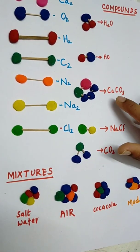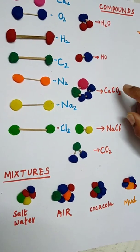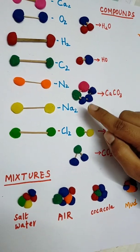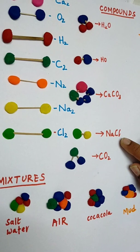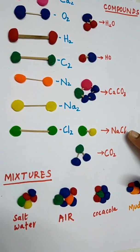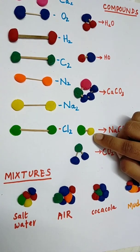Chalk composition is CaCO3, so here one calcium, one carbon, and three oxygen atoms. Salt composition is NaCl, so here one sodium and one chlorine atom.